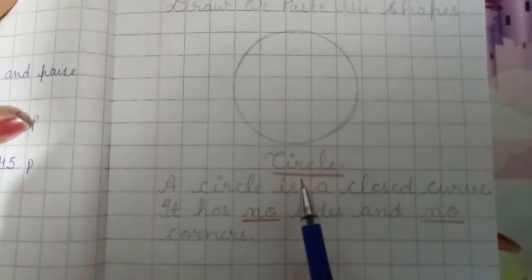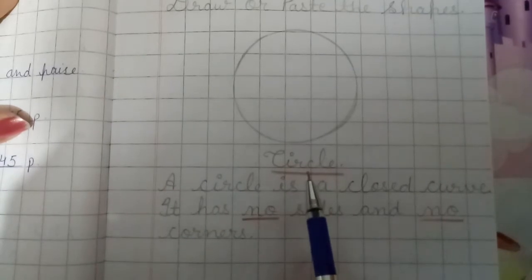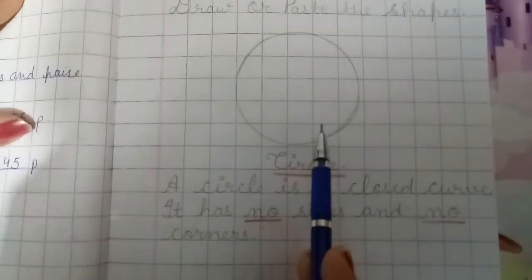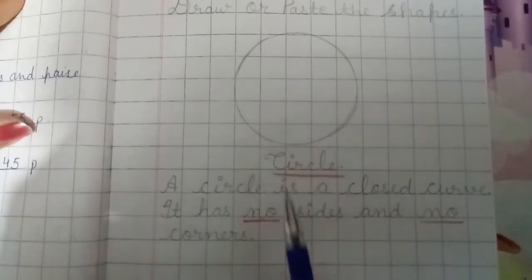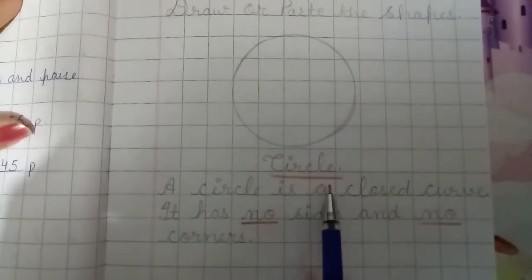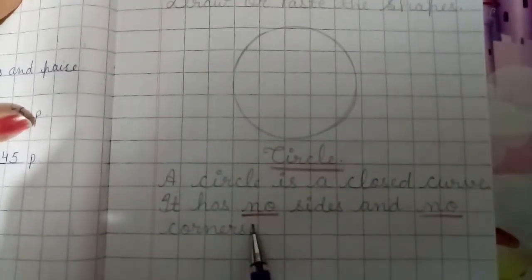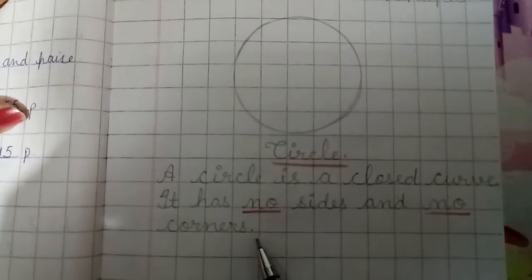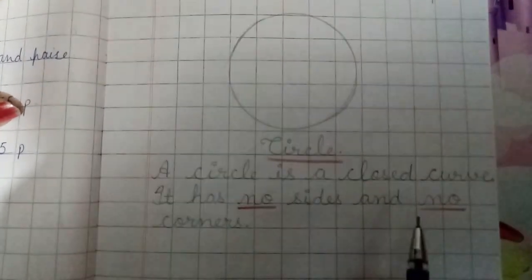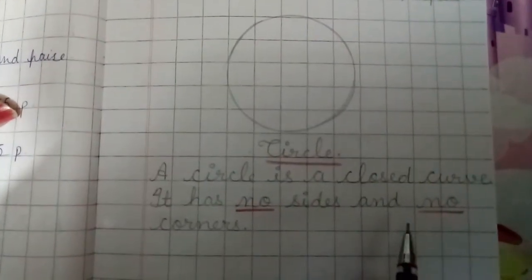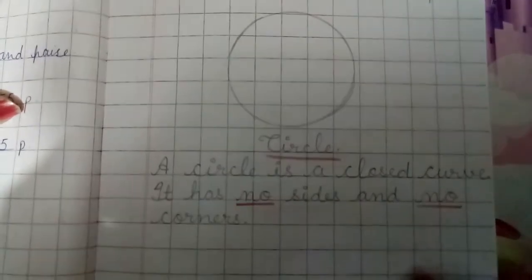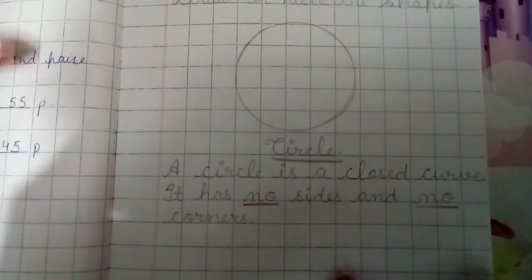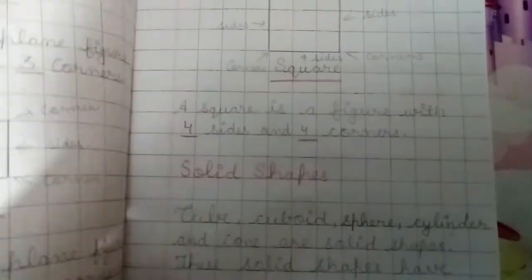You can see that there is no side and no corner in this shape, and this shape is a circle — it is a closed curve. So you can draw or paste the picture of a circle. Underline the word 'circle' and underline these two words, because they can come in your fill-in-the-blanks. You have to learn it. Then the next shape is triangle.